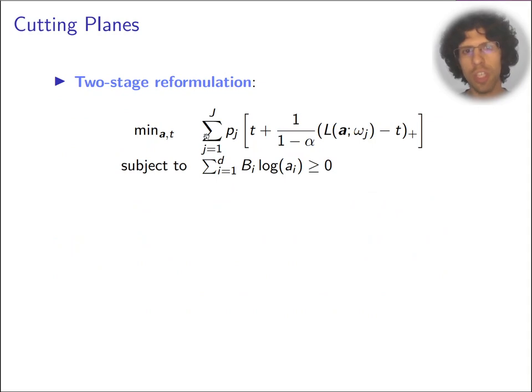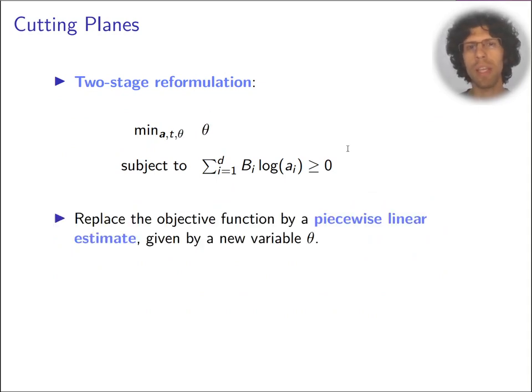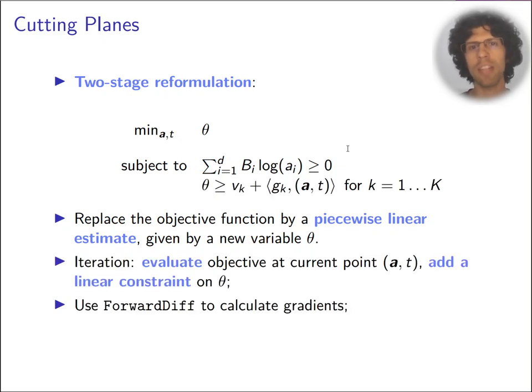What we did is that we took the objective function here and replaced by a single variable theta, which is going to be an estimate of the objective function. To get better estimates, we're going to include several constraints here which are going to transform theta into a piecewise linear estimate. To build these estimates here, we need to calculate the value of the function and gradients. That was very easily done in Julia to take forward diff to calculate the gradients of the objective function. So that was one really big win for us.